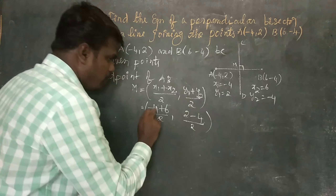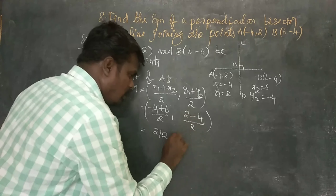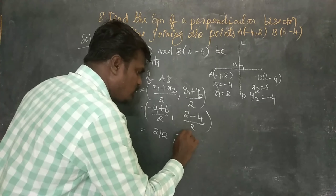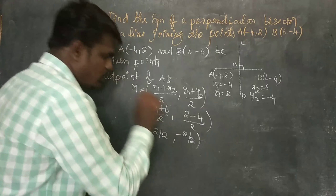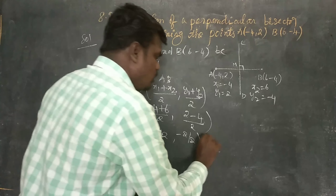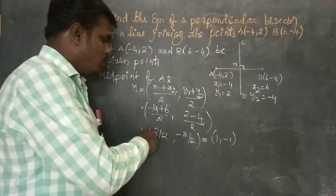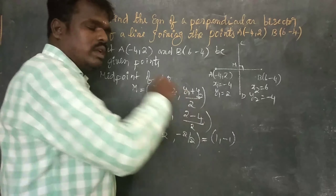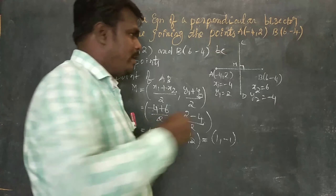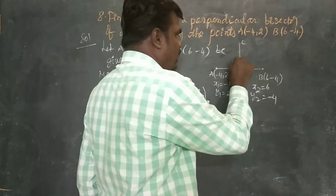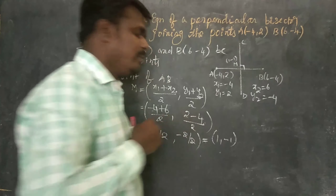So x-coordinate = 2/2 = 1, and y-coordinate = -2/2 = -1. Therefore, midpoint M = (1, -1).